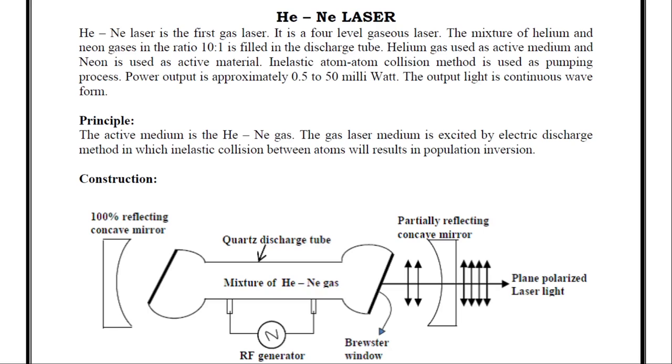The mixture of helium and neon gases are taken in the ratio 10:1 and they are filled in the discharge tube. Here helium gas is used as active medium and neon gas is used as active material. The discharge tube is used as pumping process by means of inelastic atomic collisions method. The power output is approximately 0.5 to 50 milliwatts. The output light is continuous wave.